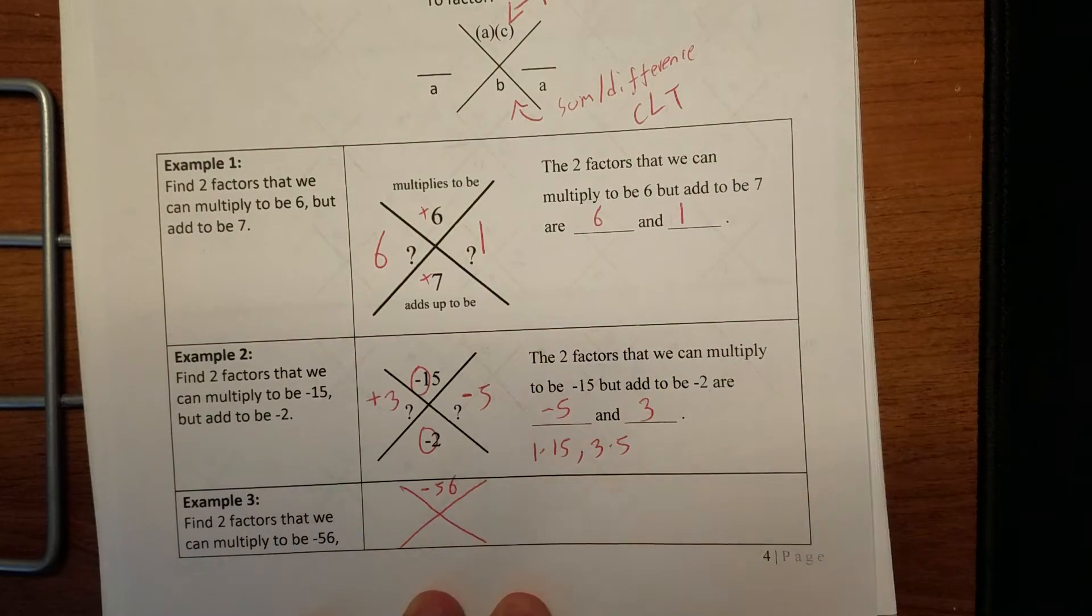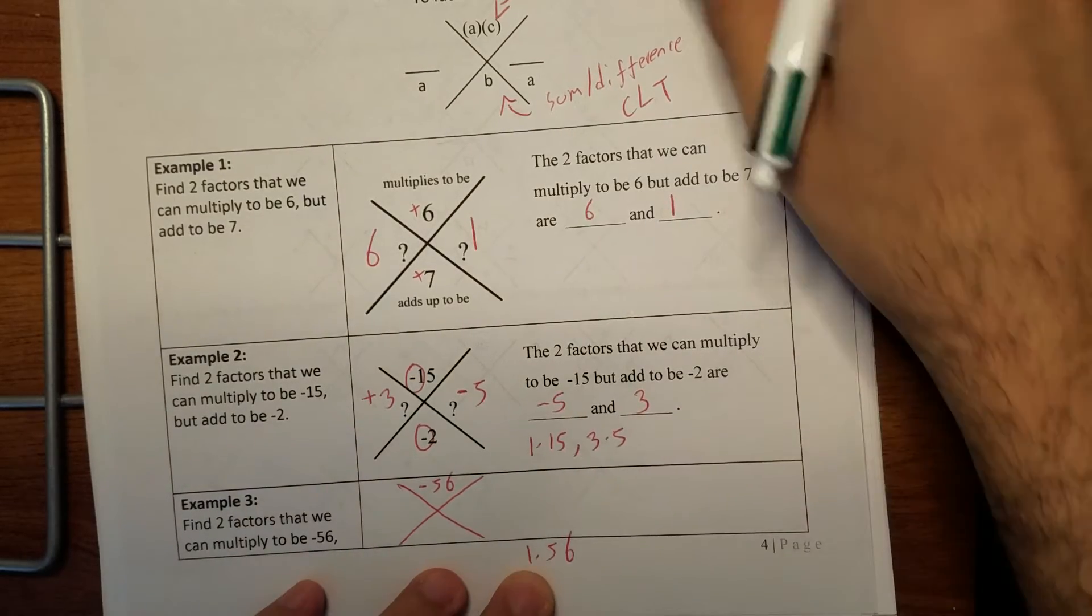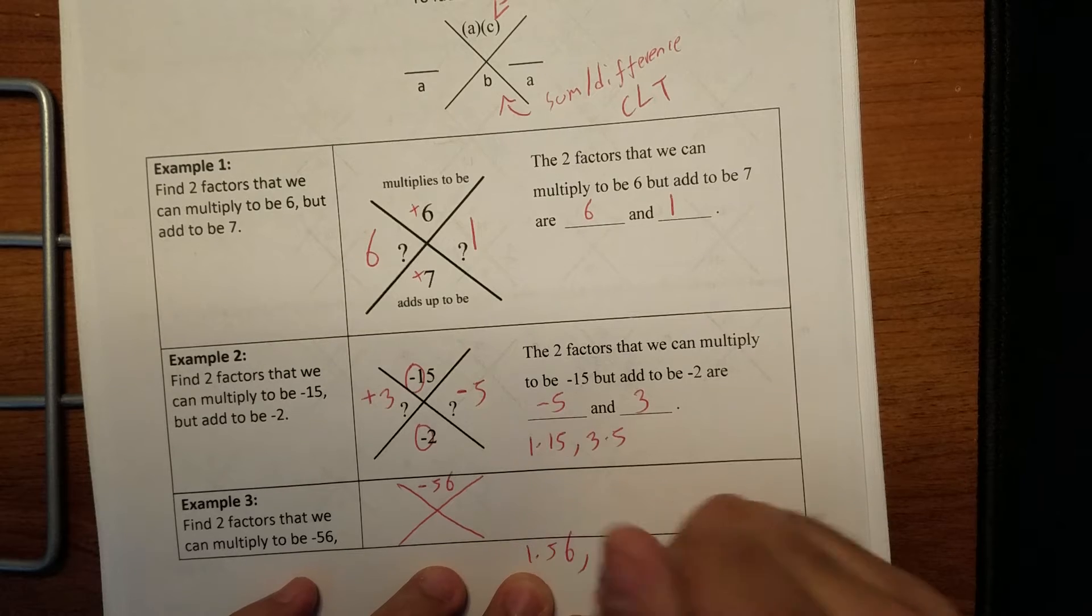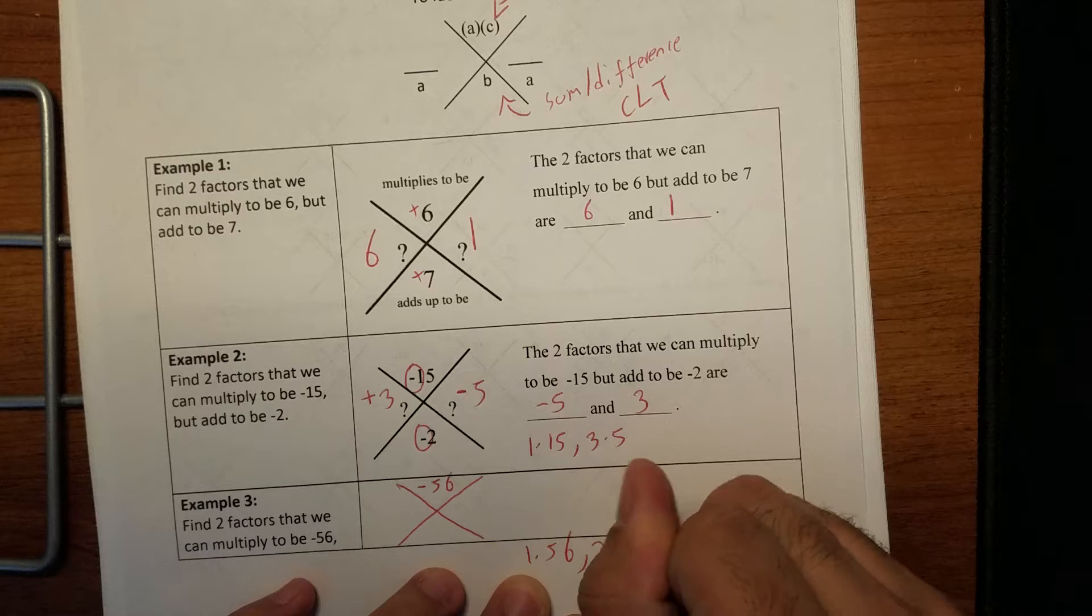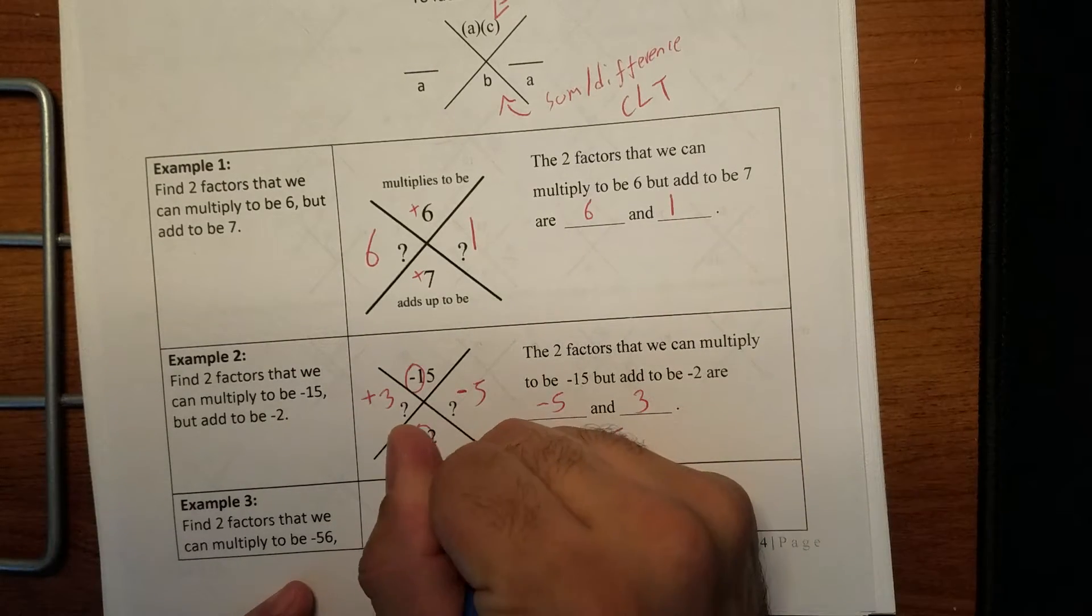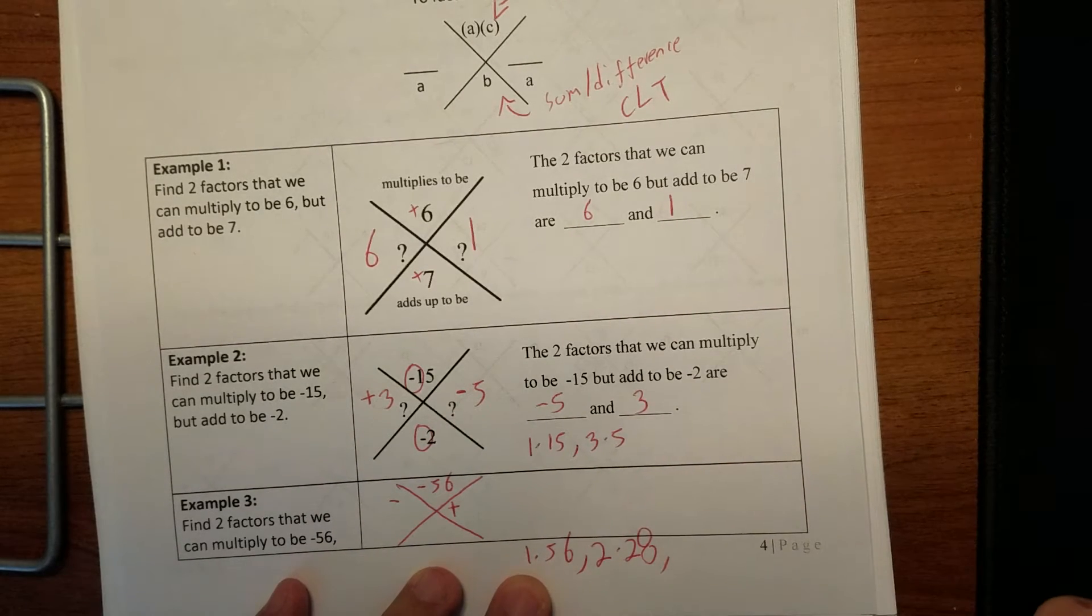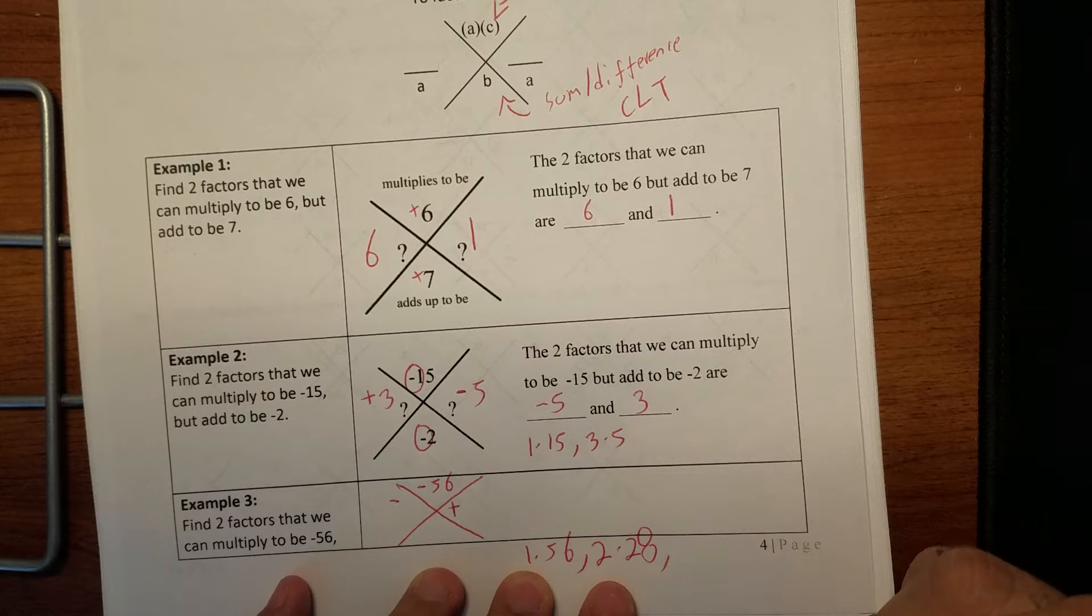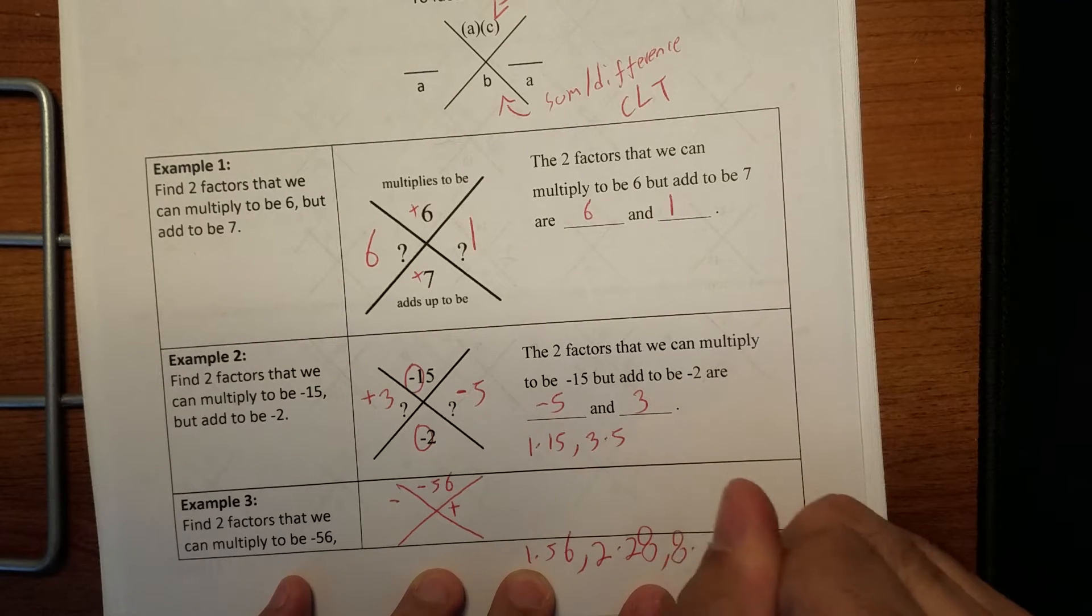If there is, I do not have it. So we have one times 56. Our other choice could also be, I'm trying to come up with somewhat easy number, two times 28. We know it's negative, so one has to be positive, one has to be negative. We also have, let's come up with another one, not too difficult, three doesn't work with 56. I know it's not nine.